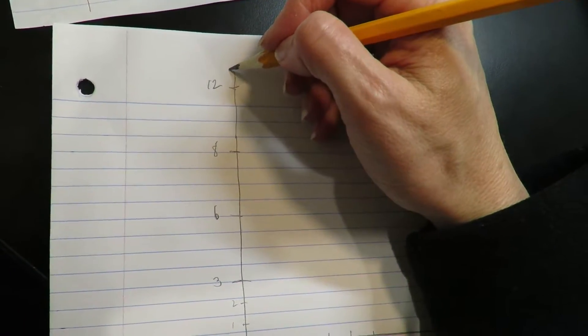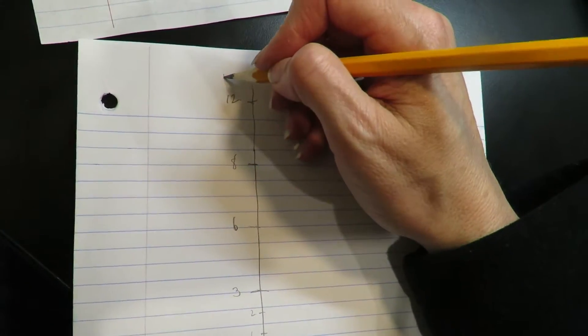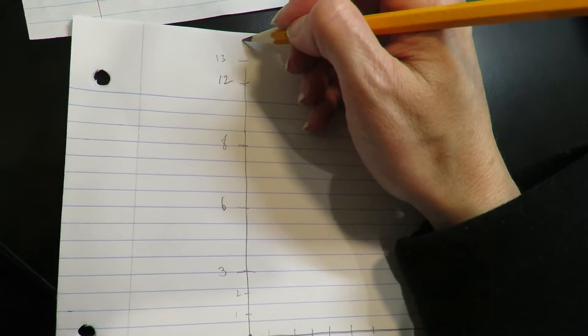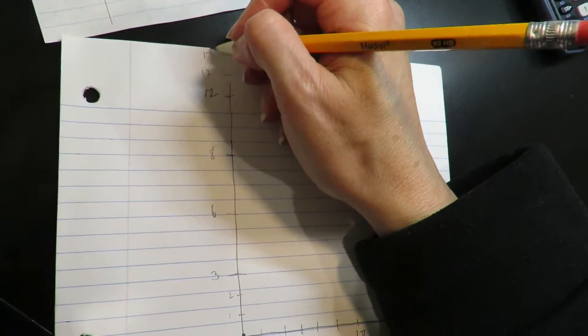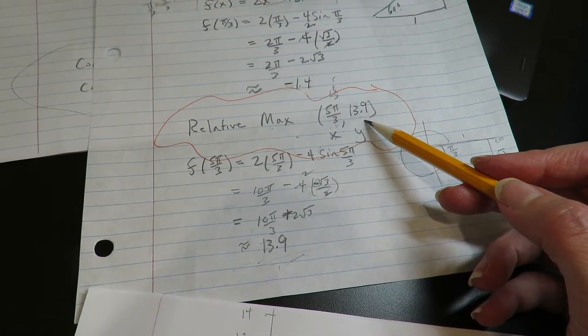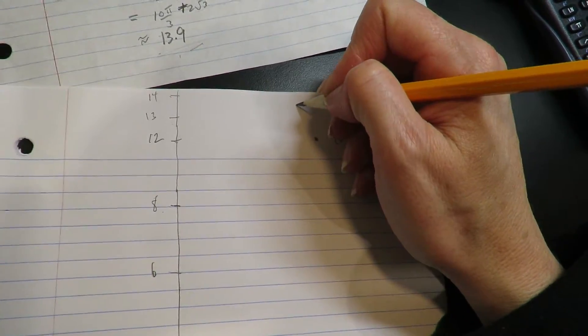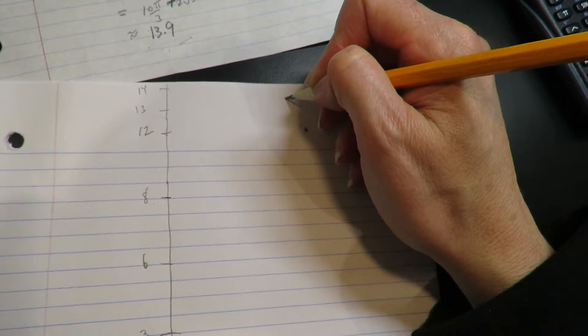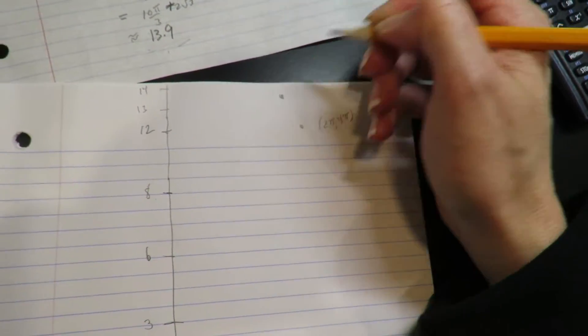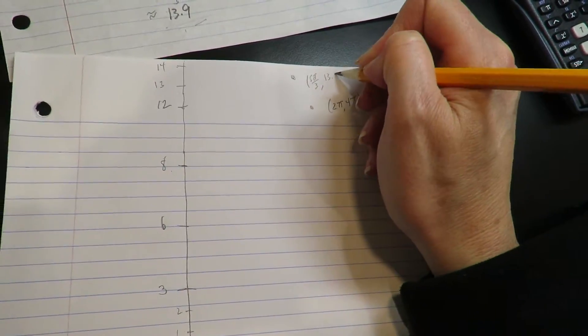1, this is 13. 4, 14, maybe here. Okay, 5π/3 and 13.9. So maybe like right about here. 5π/3 and 13.9.